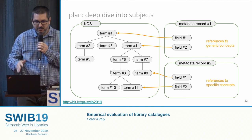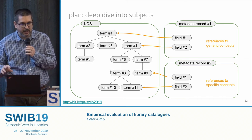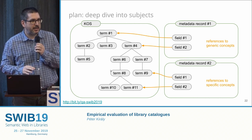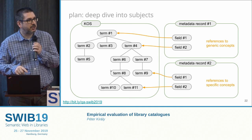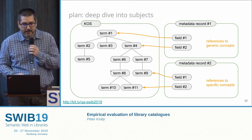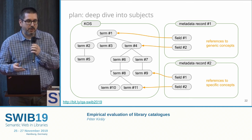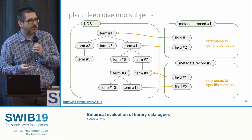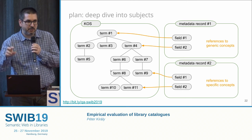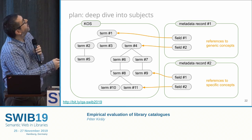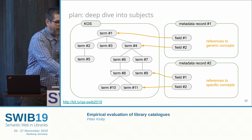My next plan is to concentrate on classifications. There are many different classification types — thesauri, ontologies, and so forth — with different kinds of relationships between nodes. Based on this information, we can check whether a library uses the best classification tree. An interesting question is whether terms come from the top of the tree — meaning they are general terms — or from deeper in the tree, meaning they are very specific.